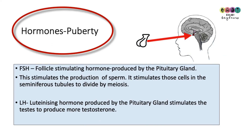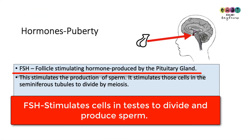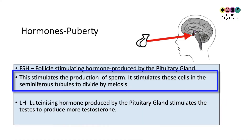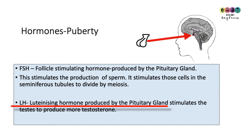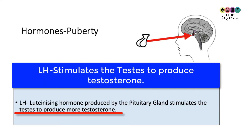There are two hormones associated with the onset of puberty in males. Follicle stimulating hormone (FSH) is produced in the pituitary gland; it travels in the blood to the testes where it stimulates cells to divide by meiosis and produce sperm. Luteinizing hormone (LH) is also produced by the pituitary gland and travels to the testes where it stimulates them to produce testosterone — so at puberty much more testosterone is suddenly produced under the influence of LH.